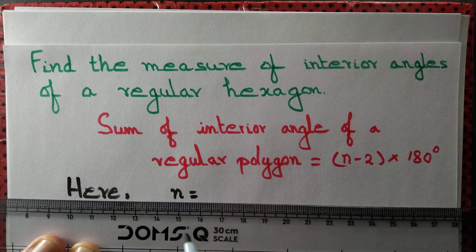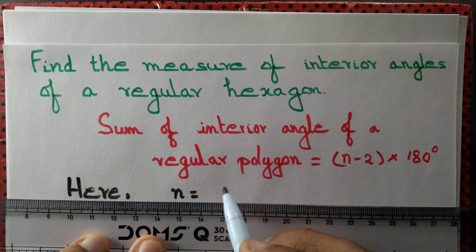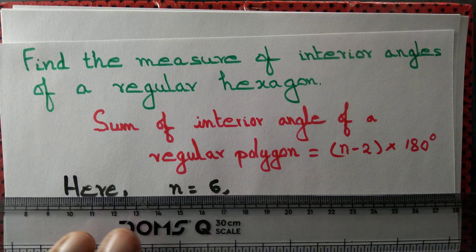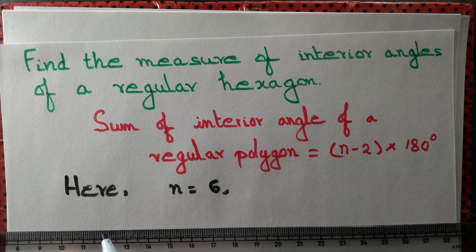Here, n equals 6 because it is a hexagon. So the number of sides equals 6. Therefore...